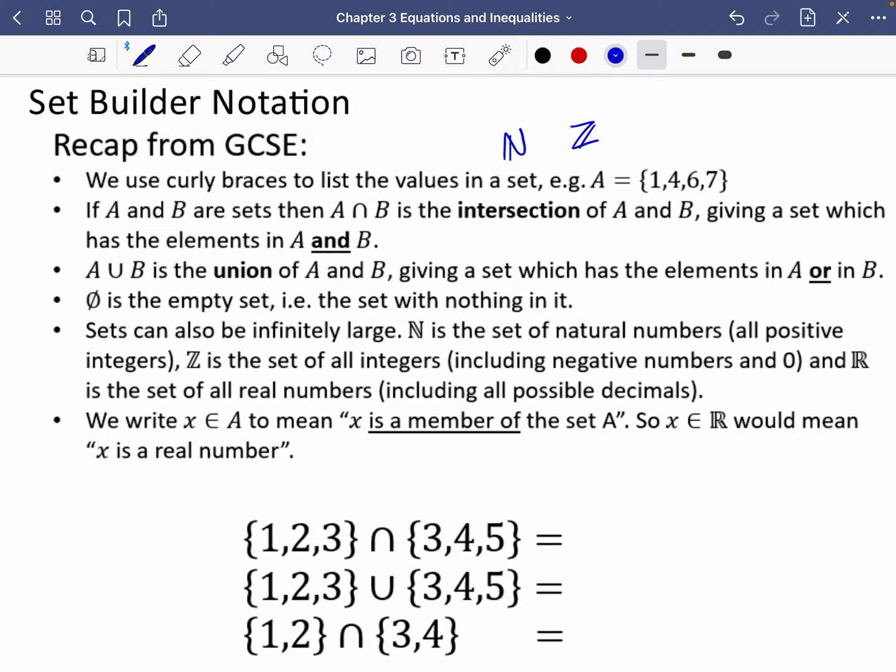And R is the set of all the real numbers, which includes all the possible decimals. So there's R drawn like that, all the possible decimals, all the positives, negatives, fractions, everything.